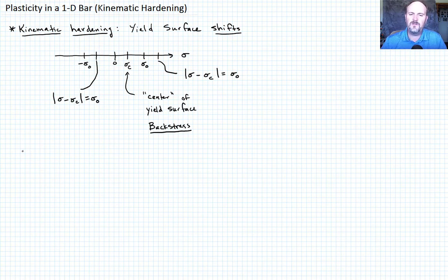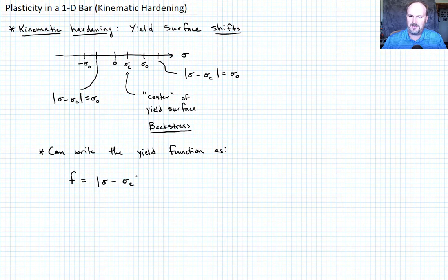And so we can write the yield function as follows. Remember, we want the yield function to be zero when yielding is occurring. So we'd say f, which is a function of sigma, is going to be equal to sigma minus the back stress sigma c minus sigma naught. So when that quantity equals zero, then we have yield.